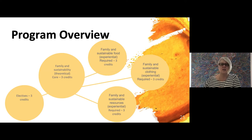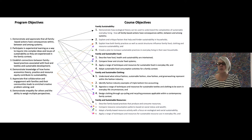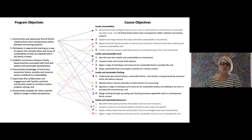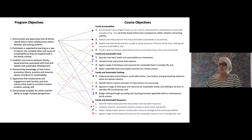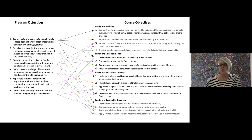In our planning, we mapped out program objectives and then course objectives, making sure each program objective is reflected in each of the four course objectives. We wanted coherence between the program objectives and how we express those through individual courses — whether through resources, food, or clothing in each of the courses.